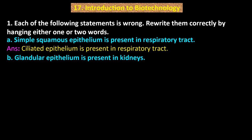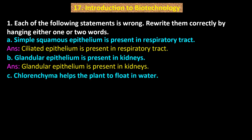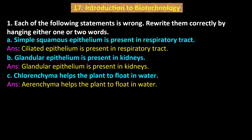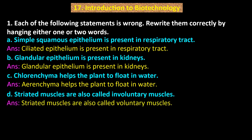B. Glandular epithelium is present in kidneys. Answer: Glandular epithelium is present in kidneys. C. Chlorenchyma helps the plants to float in water. Answer: Aerenchyma helps the plant to float in water. D. Striated muscles are also called involuntary muscles. Answer: Striated muscles are also called voluntary muscles.